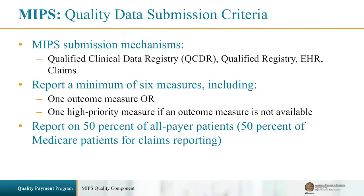High-priority measures include appropriate use, patient experience, patient safety, efficiency, or care coordination measures. Providers will need to report on 50% of all patients, including all payers, for the QCDR, EHR, and Qualified Registry reporting options, and 50% of Medicare patients for the claims option.